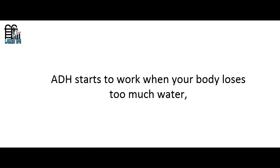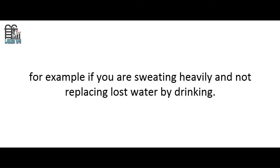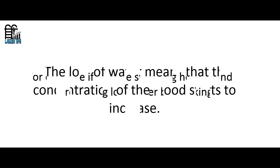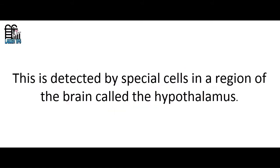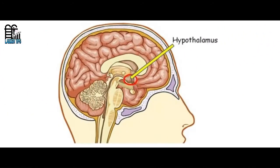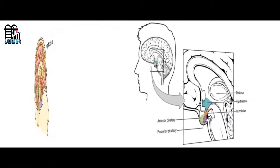ADH works when our body loses too much water — for example, if you are sweating heavily and not replacing lost water by drinking. The loss of water means the concentration of the blood starts to increase. This is detected by special cells in a region of the brain called the hypothalamus, which are sensitive to the solute concentration of the blood.